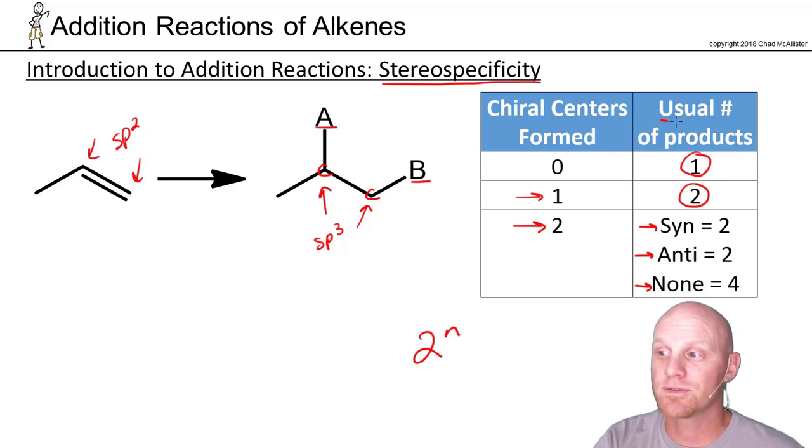I also had to be a little careful here and say the usual number of products, because if you have a chance of forming a meso compound, then you can lower all these numbers, two, two, and four here, all by one. Instead of two, two, and four, it would be one, one, and three.